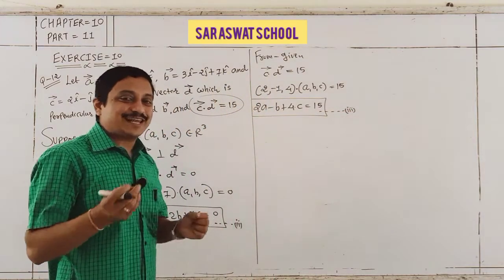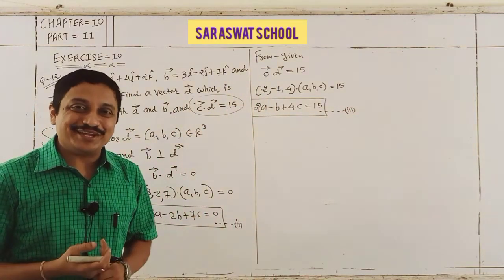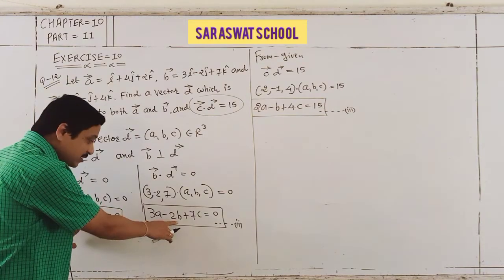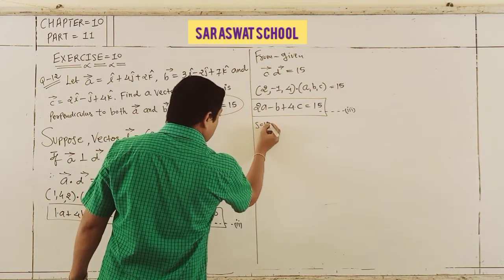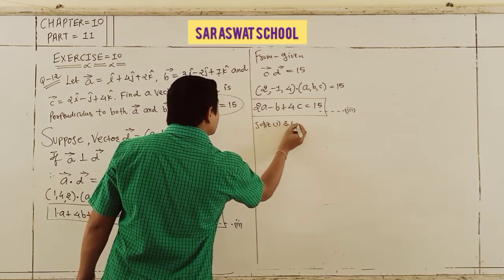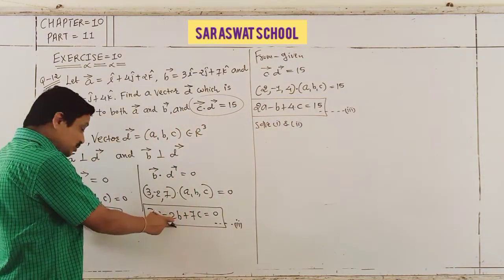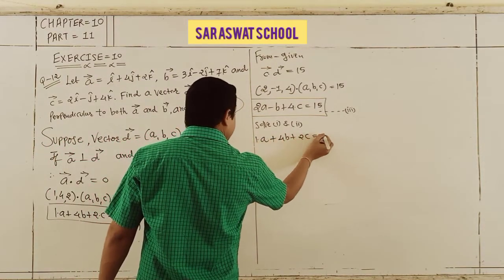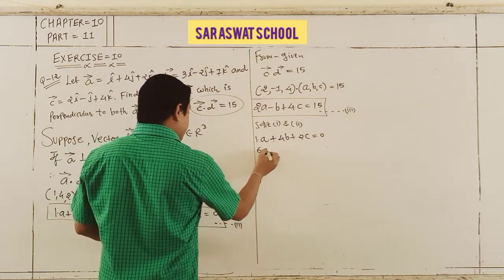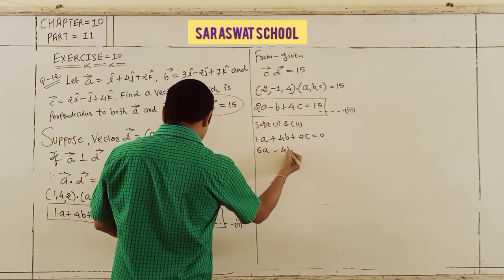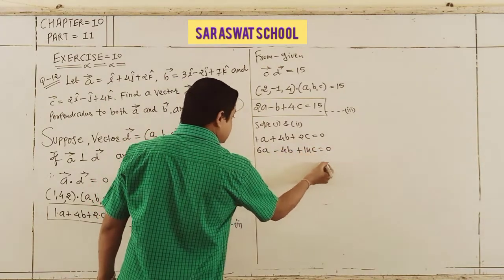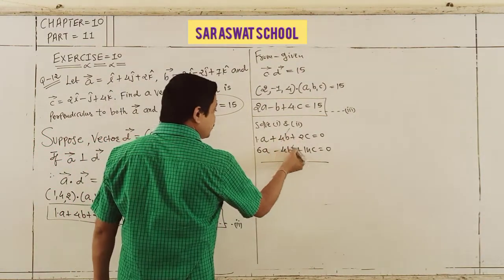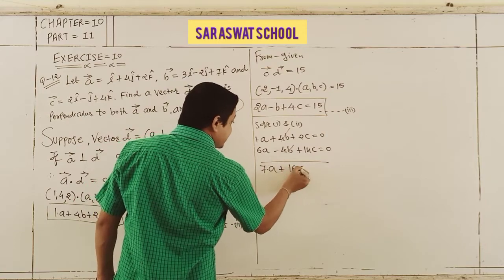Now I will solve equations 1, 2, 3 by elimination to find a, b, c. Eliminating b from equations 1 and 2 — multiply equation 1 by 2: we get 2a + 8b + 4c = 0, and 6a − 4b + 14c = 0. Adding to eliminate 4b terms gives 7a + 16c = 0. That is equation 4.